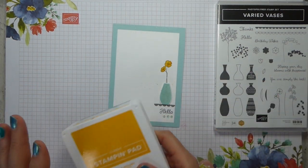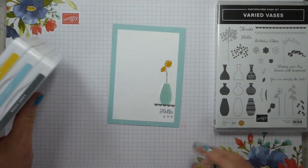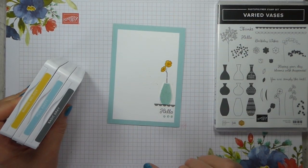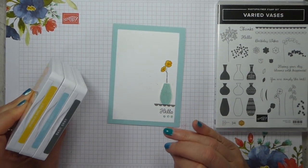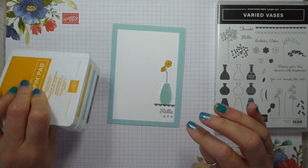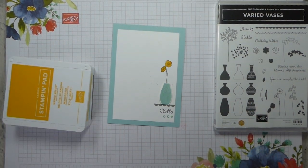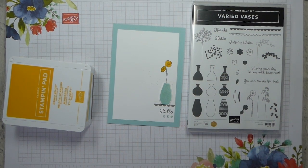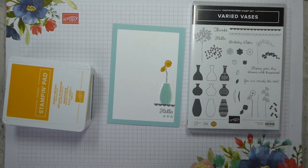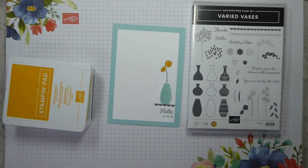You can find out how to do that over on the website. So I know there are some amazing projects that the design team have come up with. Mine's a very simple, hopefully effective one. I just realized I haven't cut my card base, but we can do that together. So I have used the Varied Vases stamp set. It's got a matching punch. We all like matching punches.